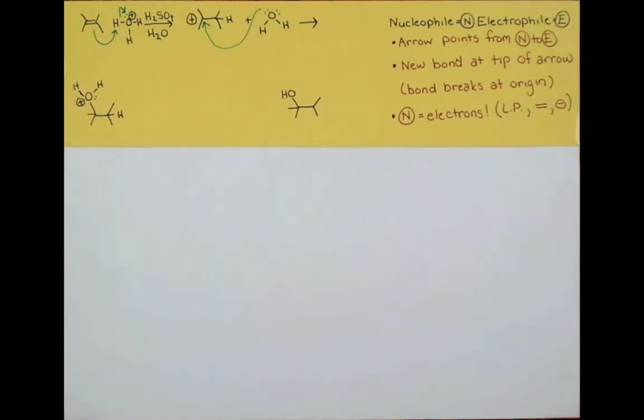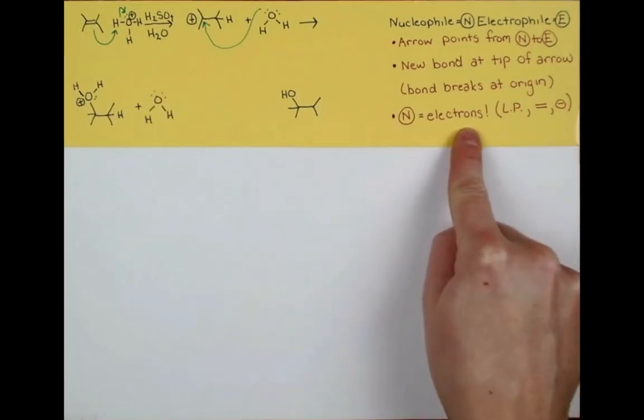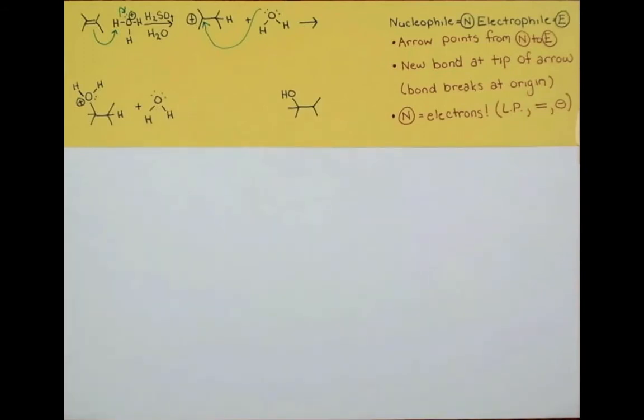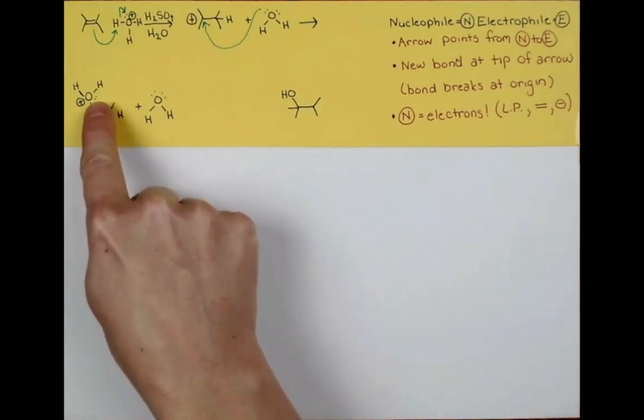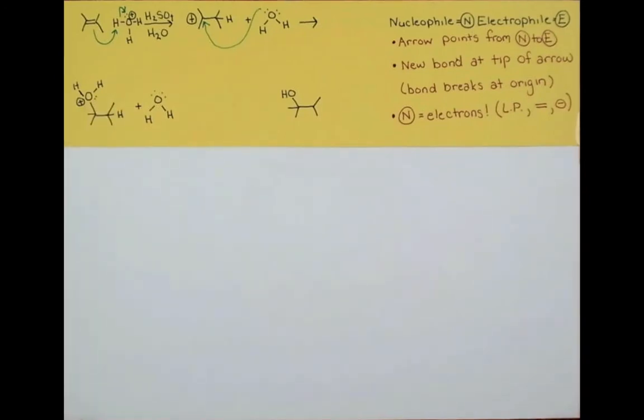Now we're getting really close to our product, we just have an extra hydrogen and a positive charge. What can happen next is water can come in and deprotonate one of the hydrogen atoms, reforming a hydronium ion and giving us our alcohol. So our nucleophile is going to be electrons, here it's the lone pair on oxygen, and we're going to point to this extra hydrogen atom and put this lone pair back on oxygen. This arrow pushing gives us our alcohol and also a molecule of the hydronium ion.